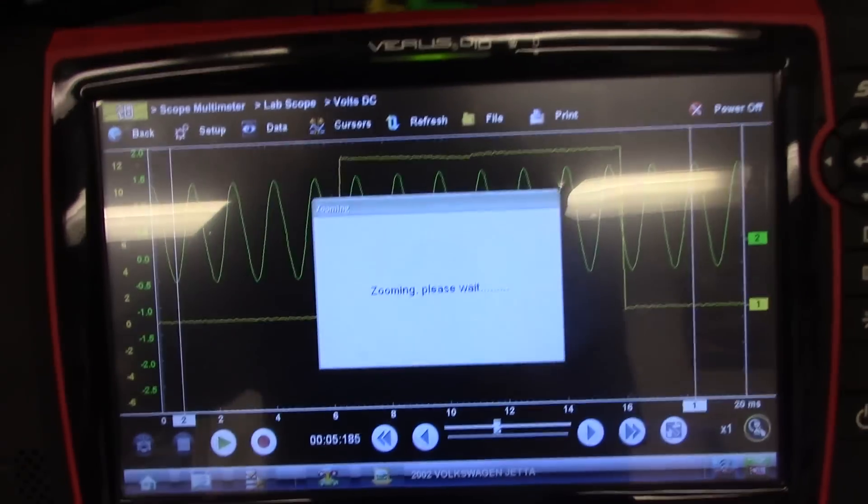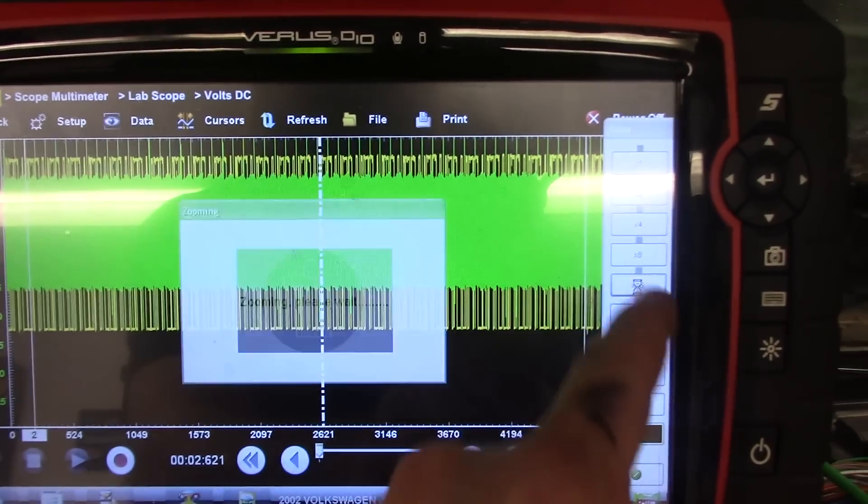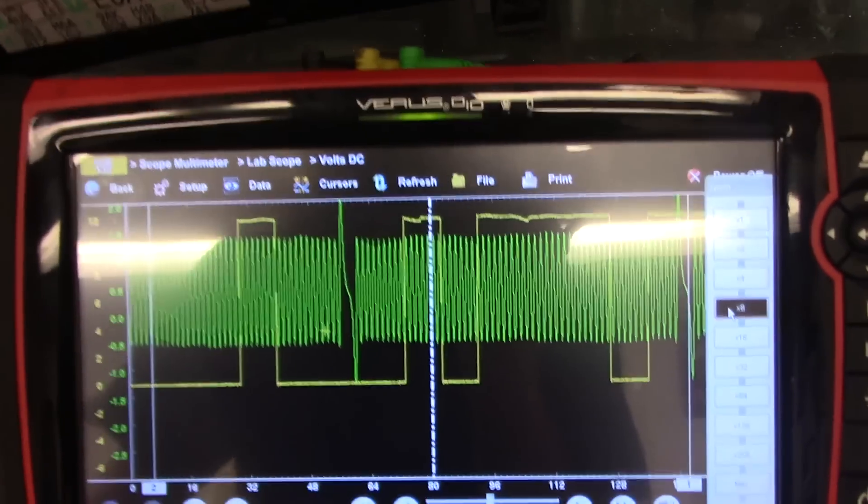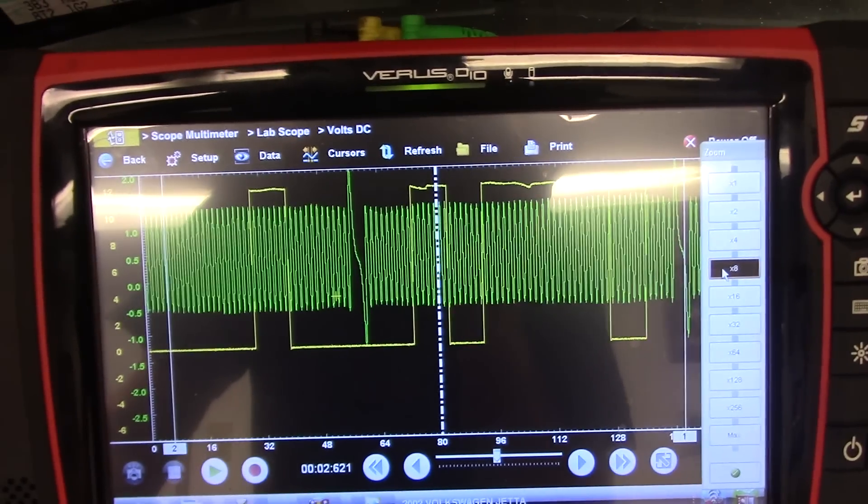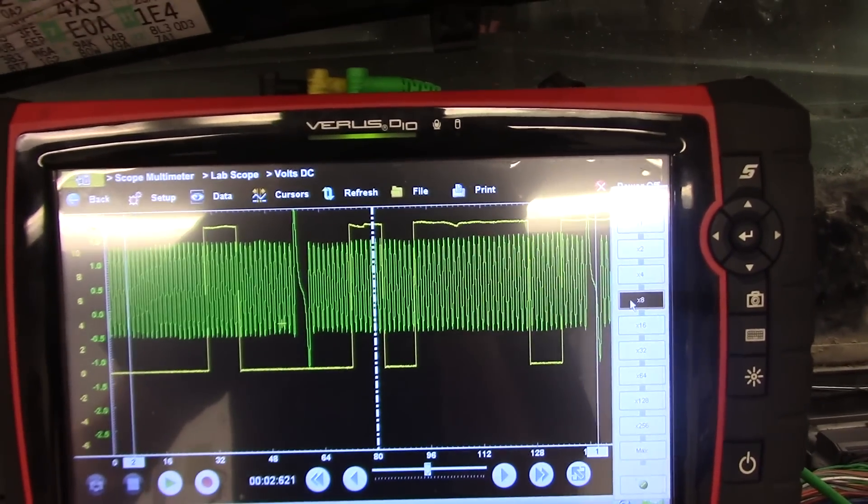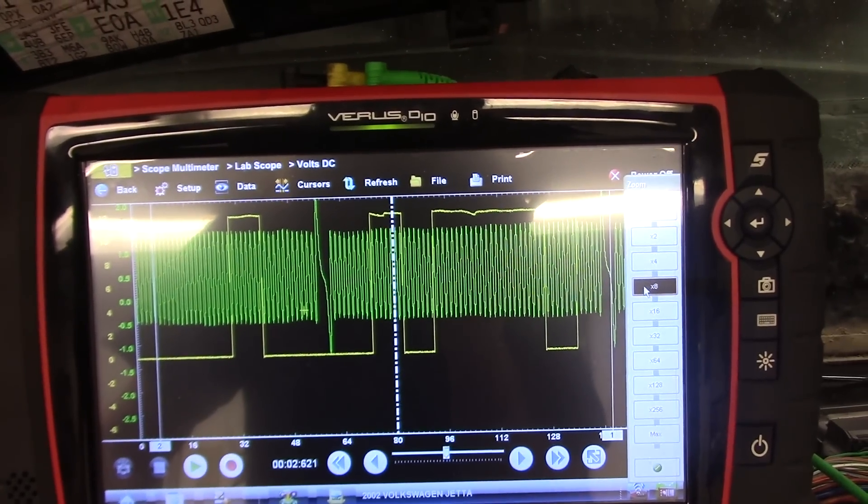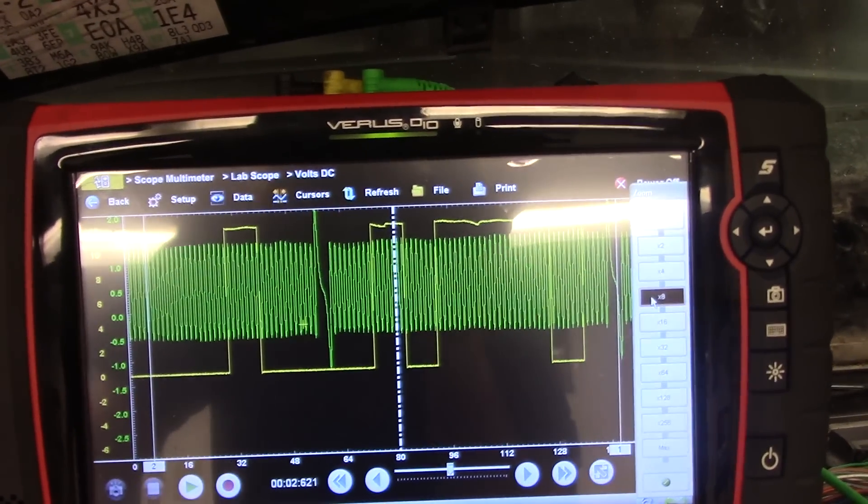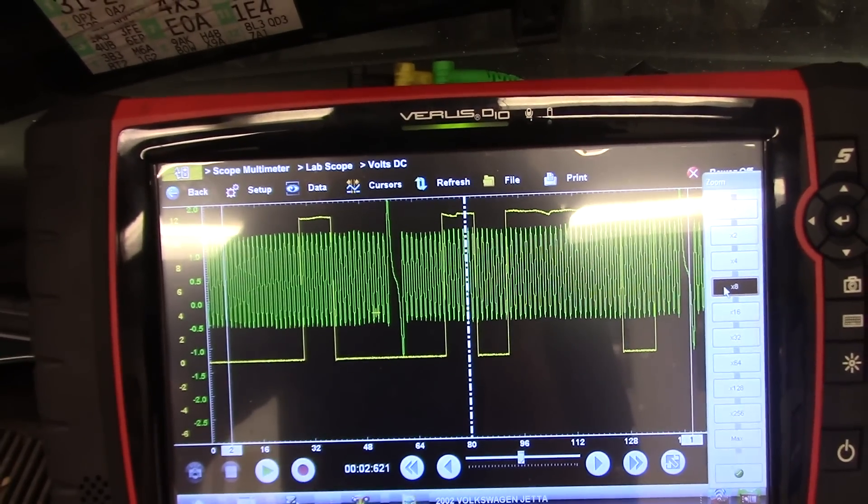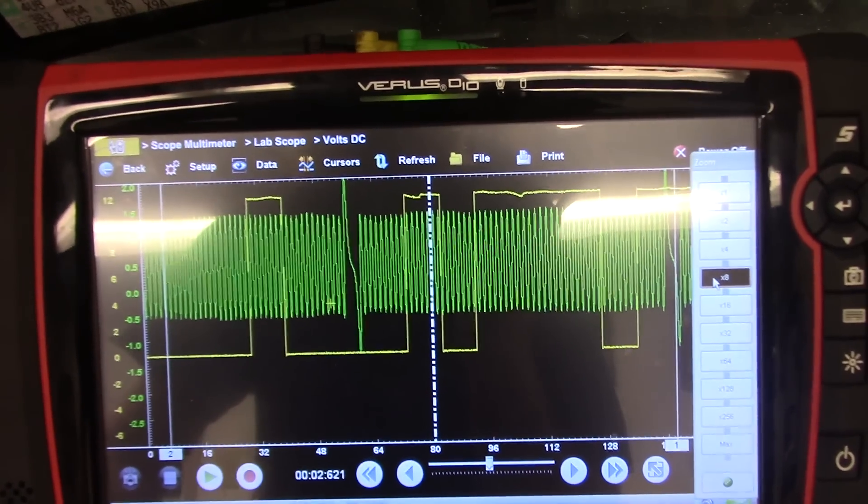We'll zoom out. And now what we have is a cam and crank correlation. And what we need is a known good one to compare it to. It is possible. I think this thing has a hundred and some thousand miles, a lot of miles on this. It's possible. It could be a stretched timing chain. It could be timing chains of guts. So I'm going to look for a known good cam crank waveform, and we'll go from there.